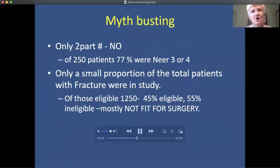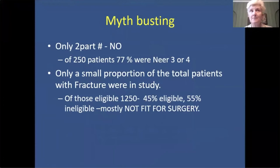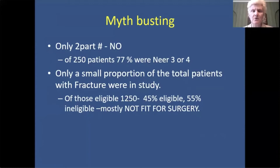This was a controversial paper, and when people don't like what it says they try to rubbish it — and that certainly happened. As an examiner, I've heard a lot of myths about this paper. Myth: it was only two-part fractures. No — of the 250 patients, 77% were Neer three or four. Myth: only a small proportion of the total group were in the study. No — 45% of the total were eligible, but 55% were ineligible, mostly because they were not fit for surgery.